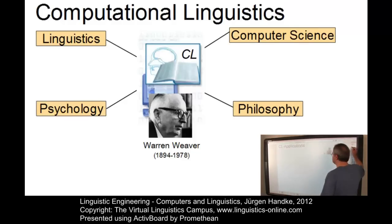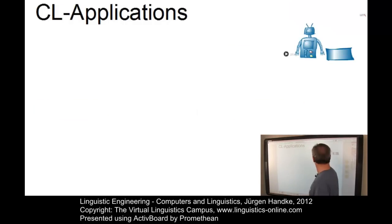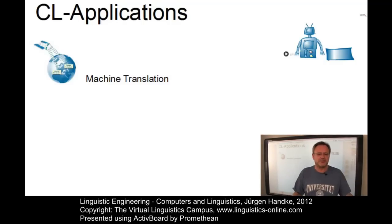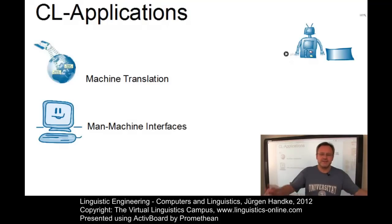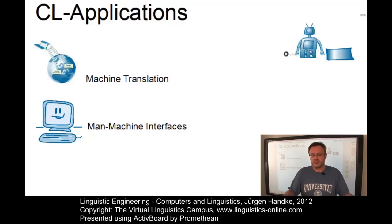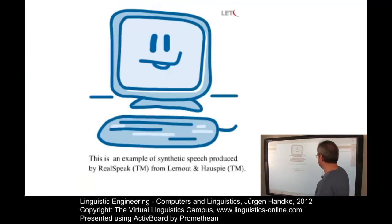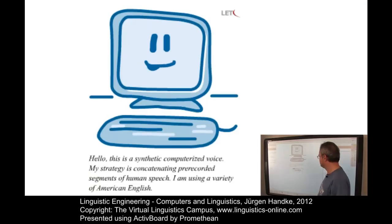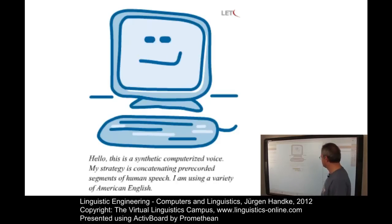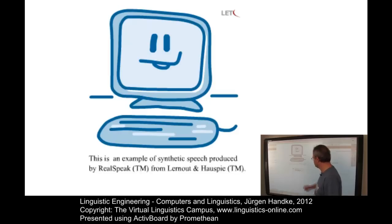There are several computational linguistics applications. For example, machine translation — we have already seen the Google example. Man-machine interfaces ideally use speech as input and output, where the output is some sort of synthetic speech. Here is an example of a synthetic computerized voice: its strategy is concatenating pre-recorded segments of human speech using a variety of American English. Another area deals with information extraction and retrieval, where computers are programmed to analyze the exploding amount of texts available on the web and elsewhere, in order to extract selected bits and present them in a structured way, or to retrieve documents containing information of interest to the user.